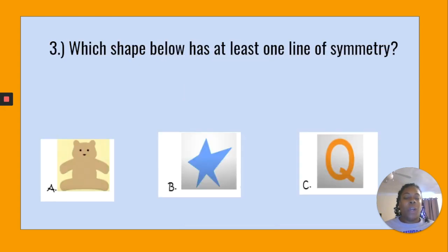Number three: Which shape below has at least one line of symmetry? Our teddy bear, our star, or the letter Q. Choose your answer now.